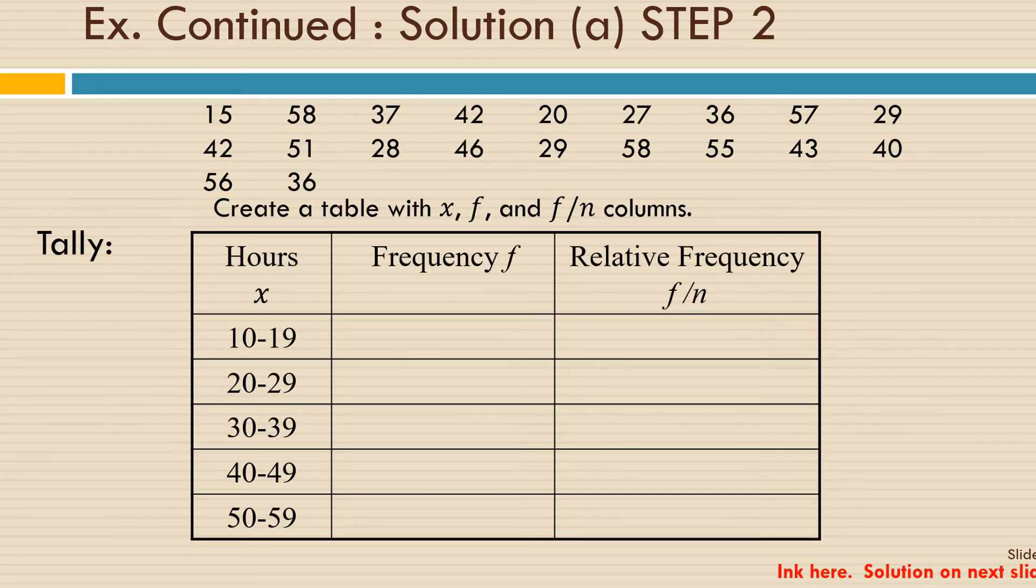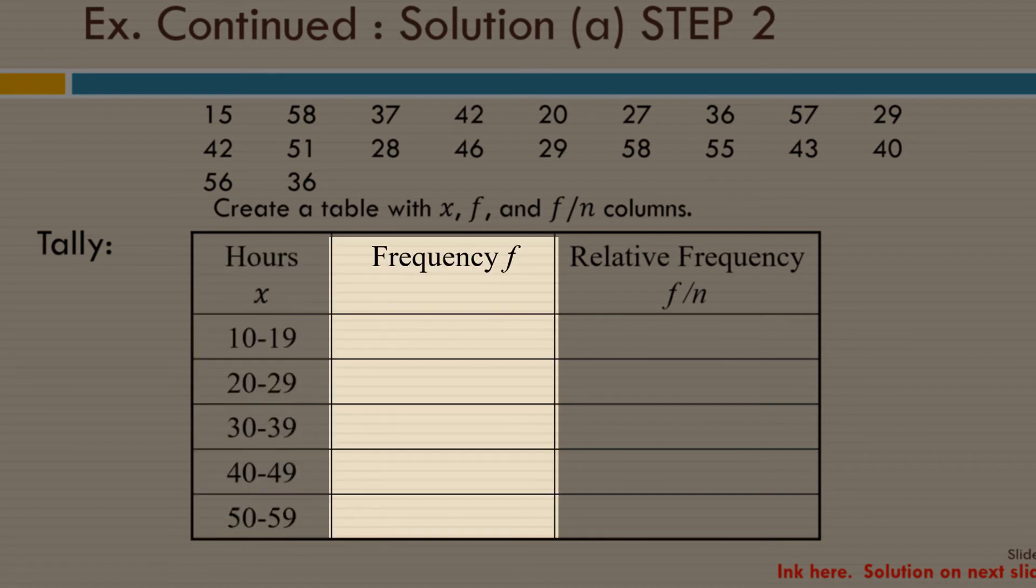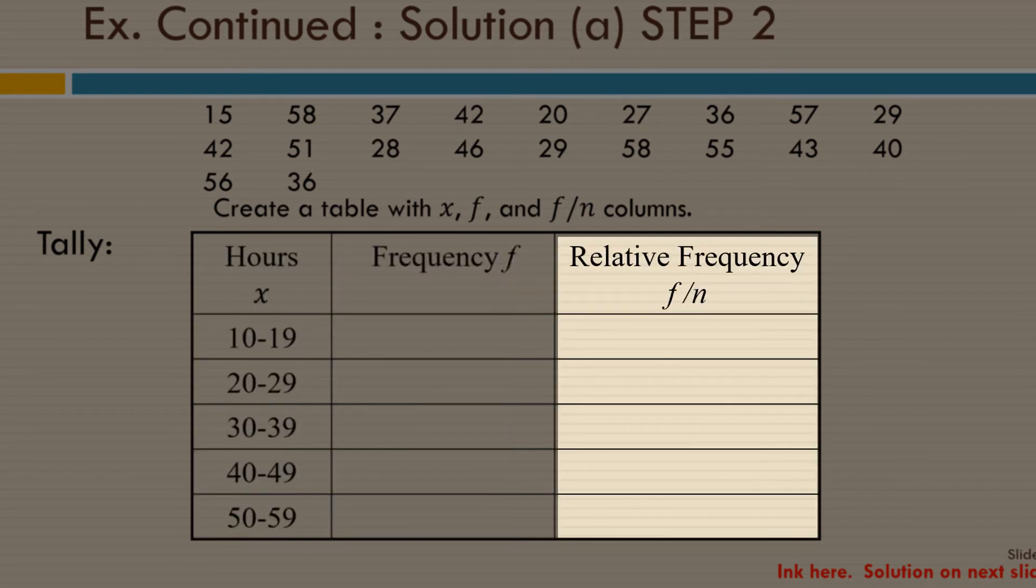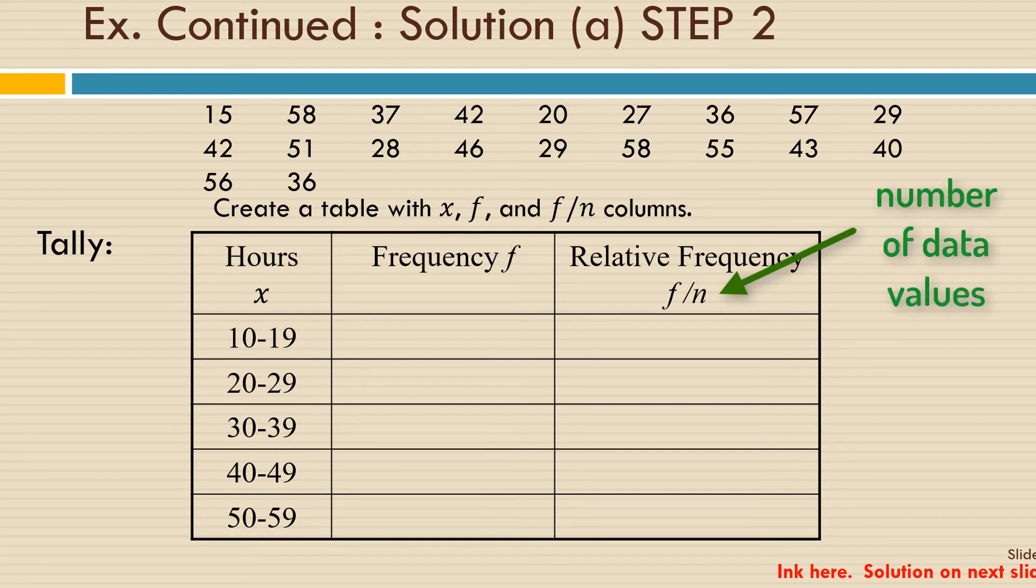So now we're going to create a table with our data values, x, our frequencies, f, and we were also asked for relative frequency. Remember, relative frequency is the portion of times that the data value occurs instead of the number of times. It can be written as a fraction, a decimal, or a percent. And the way that you calculate it is you take the frequency of that particular data value, or data class in this case, and divide it by the total number of data values. The number of data values in our set is 20.